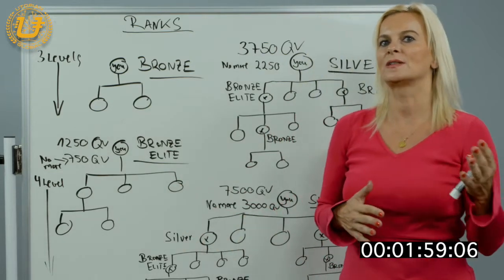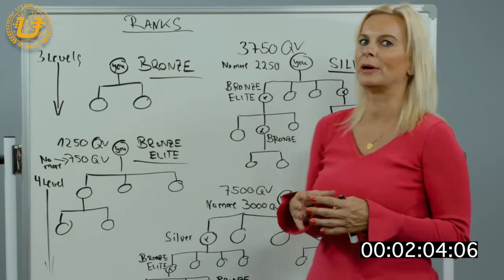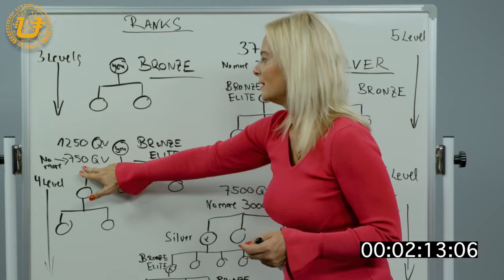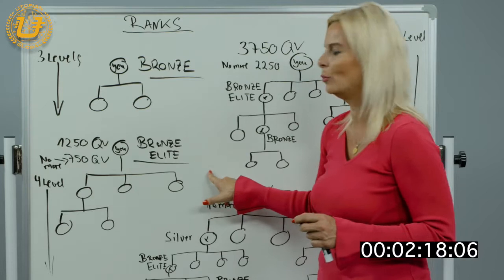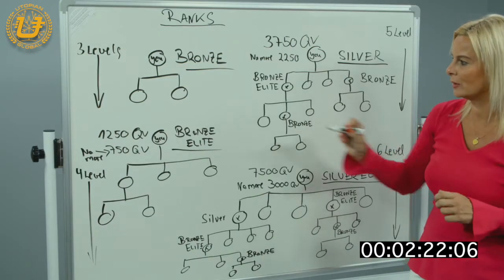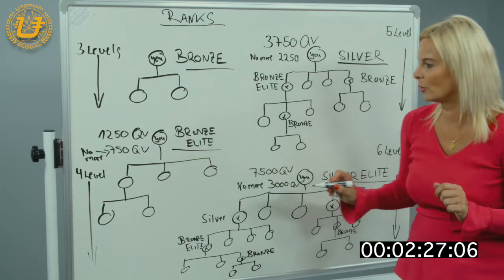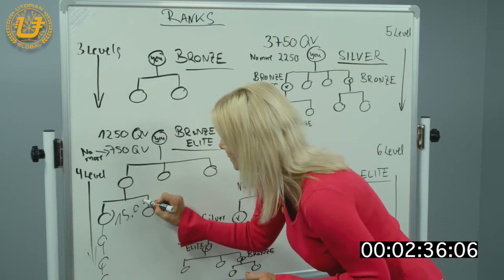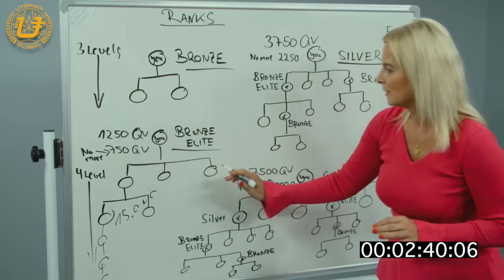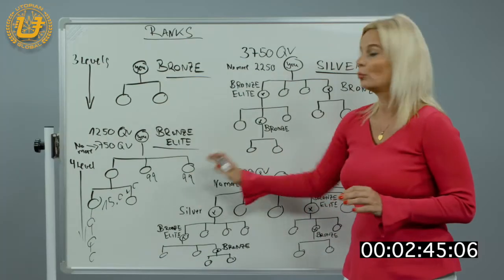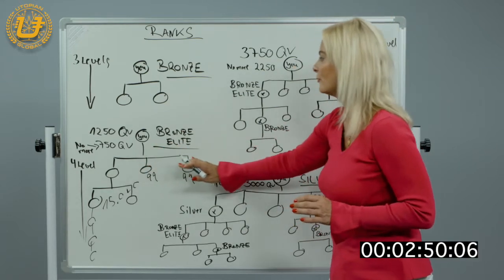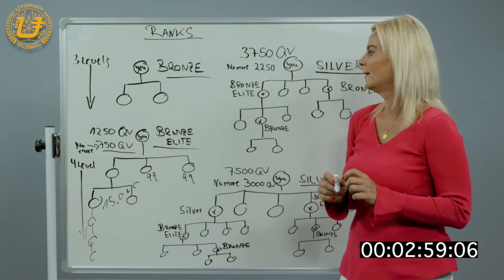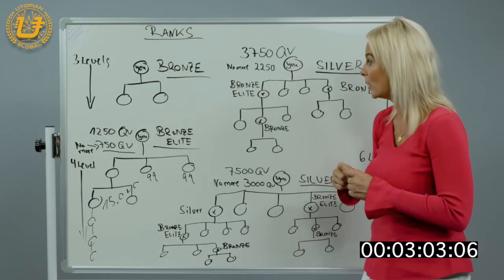There is also the 60-40 rule, which applies to lower ranks. For Bronze Elite, no more than 750 QV can come from any one leg. So if you have three people frontline and one leg produces 15,000 points, only 750 of those count toward your rank qualification. The other legs might only have 99 points each — that would be unbalanced and you wouldn't qualify. You need balance across your legs.